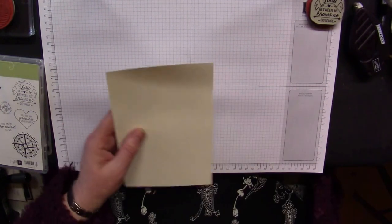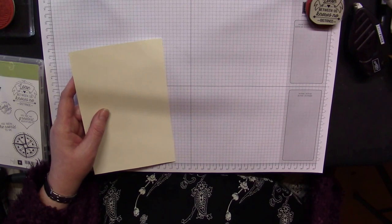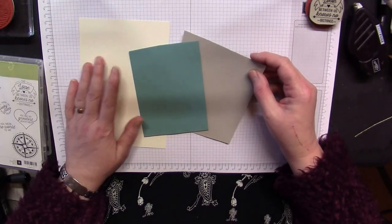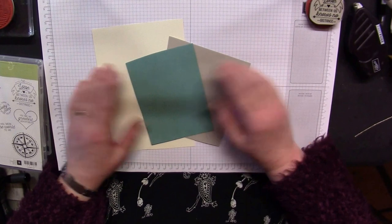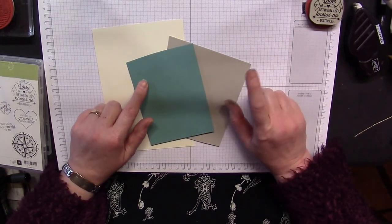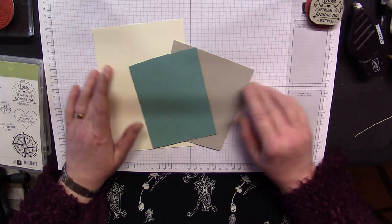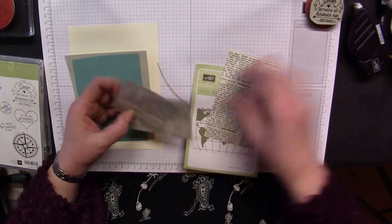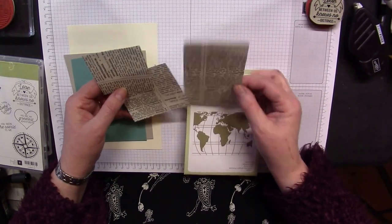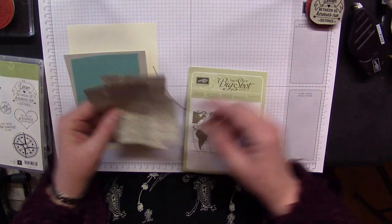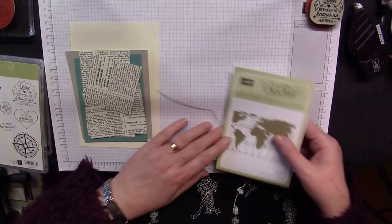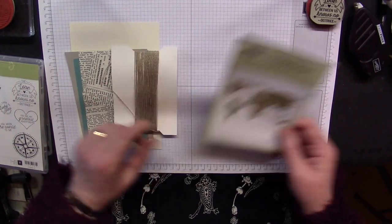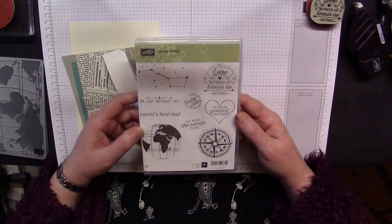We're using products from the Going Global cardstock pack that goes with the stamp set. That is Lost Lagoon, Sahara Sand, and Very Vanilla. I've also got some scraps of Typeset designer series paper and I'm sure you've got bits like that hanging around, but I did include it in the bundle. You could just swap that for any other designer series paper. You've got your linen thread and the main stamp set.